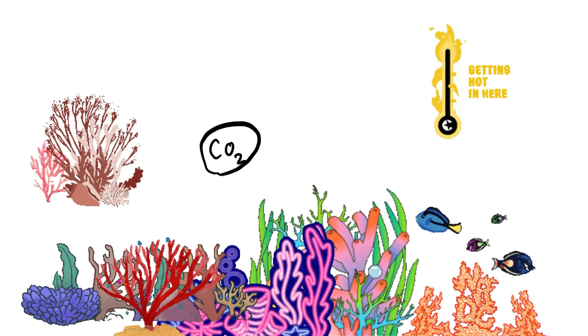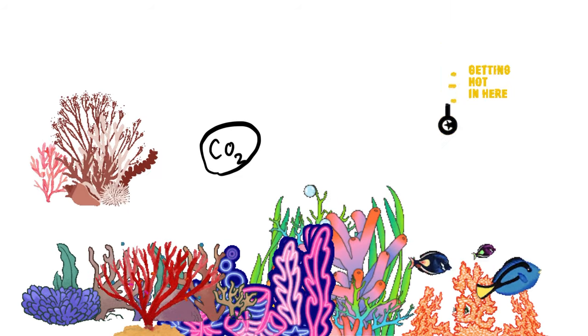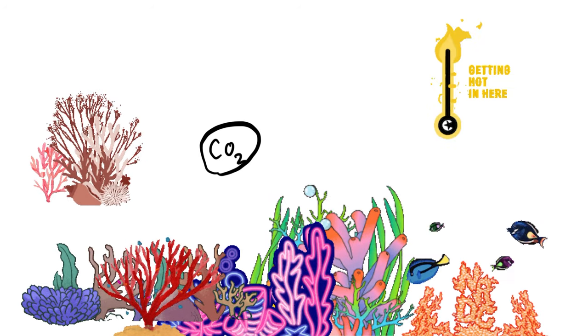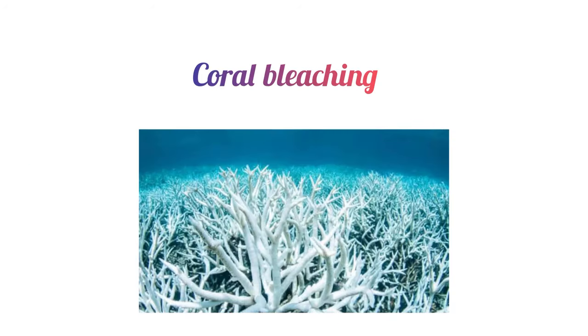It has been determined that the primary cause of coral bleaching is caused by heat stress due to changes in temperature of the oceans. As such, the corals start to bleach and eventually die.